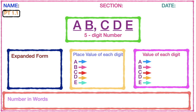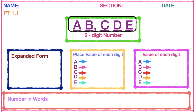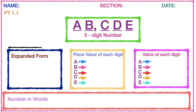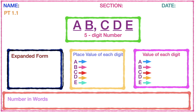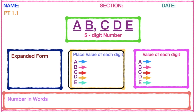Let's start doing your Performance Task 1.1. At the middle of your paper, you're going to create a 5-digit number. Then, after creating that 5-digit number, you're going to write it in expanded form. After that, you're going to give the place value of each digit.